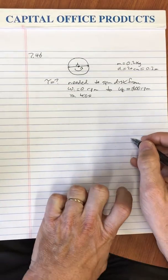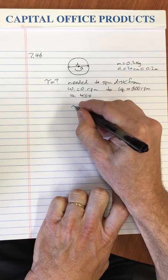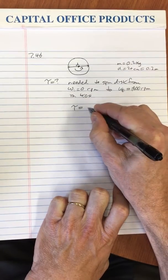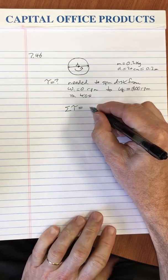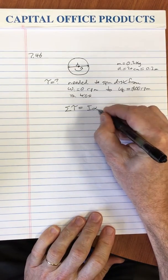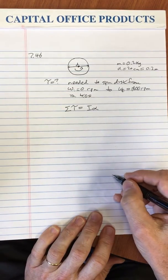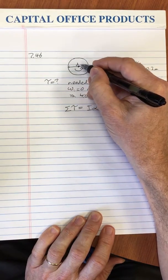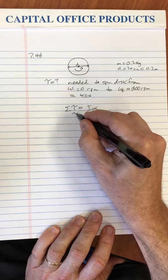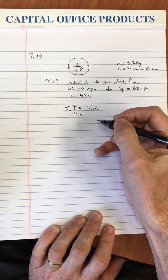So a torque, we know, gives rise to an angular acceleration. The rotational version of Newton's second law says the sum of all the torques is equal to the moment of inertia times the angular acceleration. In this case, there's a single torque that's being applied by motor to this disc.